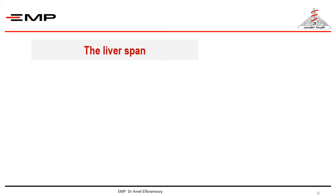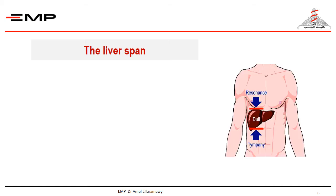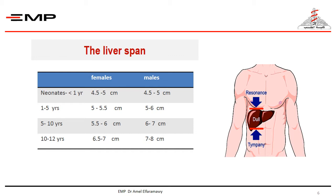It is more accurate to assess the size of the liver based on assessment of the liver span. The liver span is determined by measuring the distance between the upper edge — determined by percussion — and the lower edge — determined by palpation — in the right midclavicular line. The liver span increases linearly with age, body weight, and height in both genders. The normal range for liver span by percussion in neonates is 4.5 to 5 centimeters. At 12 years, the normal value for boys is 7 to 8 centimeters, and for girls is 6.5 to 7 centimeters.